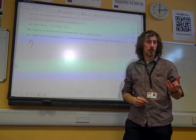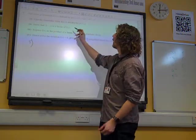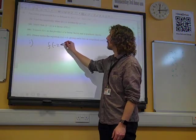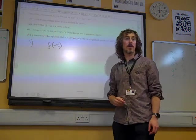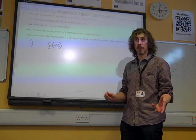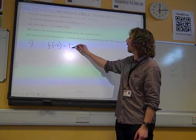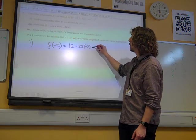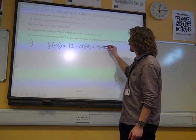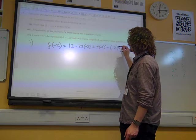Well, that's just demonstrating that we know the remainder theorem says we do f of minus 2. And it was nice that almost everybody tried to do it with the remainder theorem rather than long division. So we've sub minus 2 in there to get 12 minus 22 times minus 2 plus 9 times minus 2 squared minus minus 2 cubed.